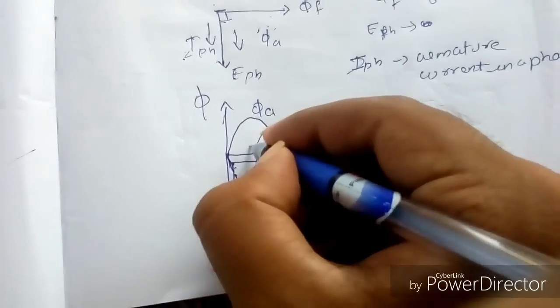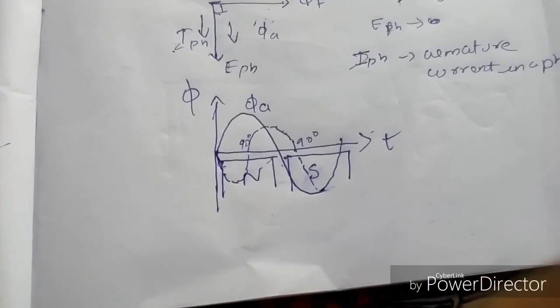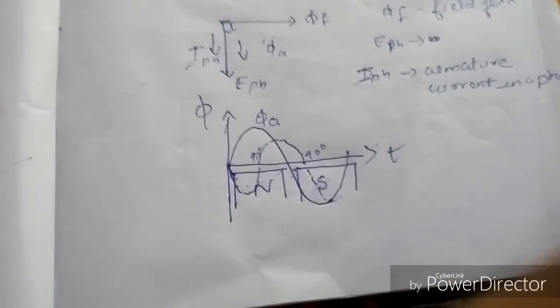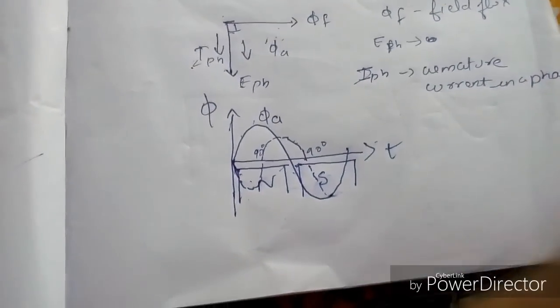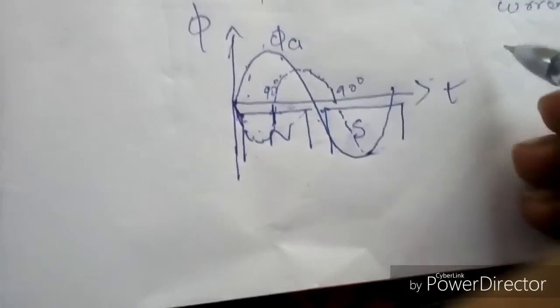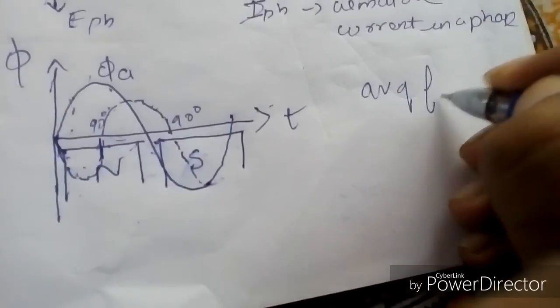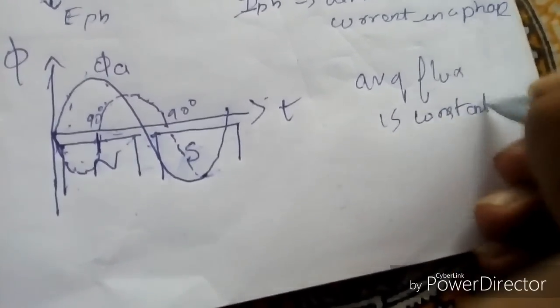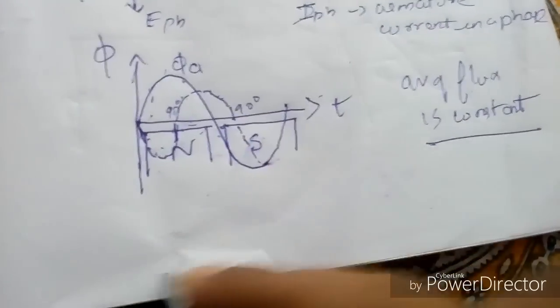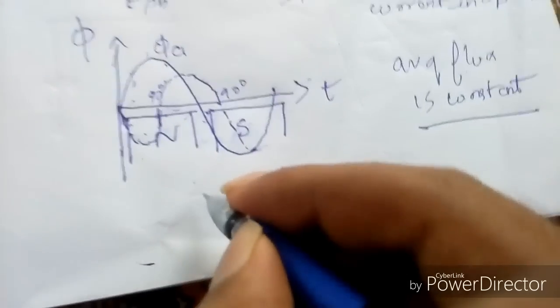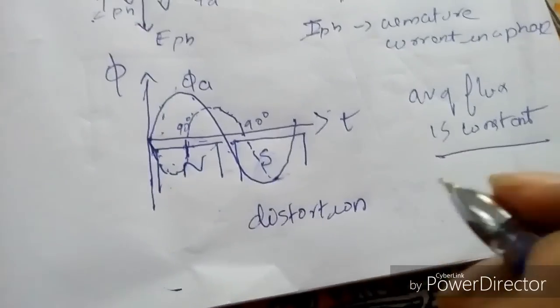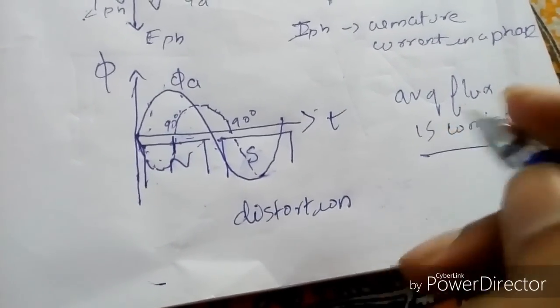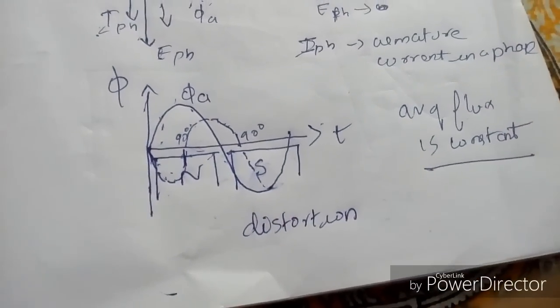The phase difference is 90 degrees. On the left side of the north pole, both the armature flux and field flux oppose each other. But on the right side, these two fluxes assist each other, and on the left side these two fluxes oppose. So the average flux is constant — the flux is not reduced. But there is a distortion in the flux distribution.